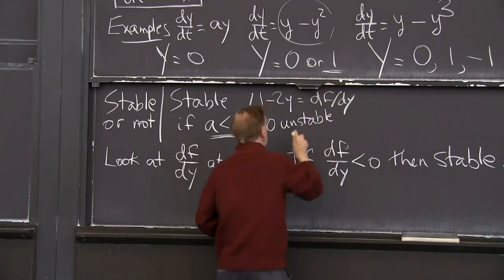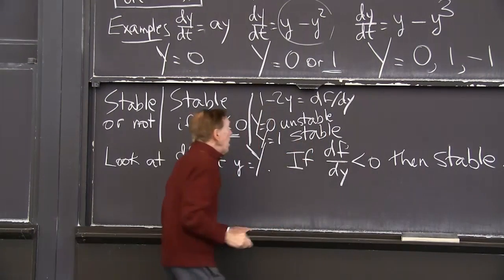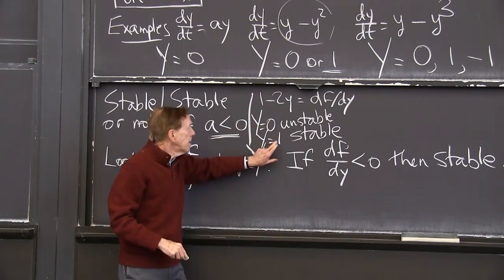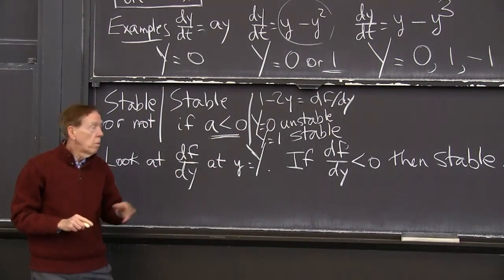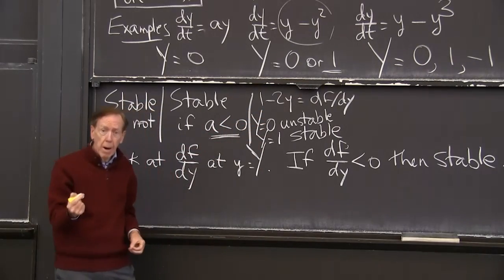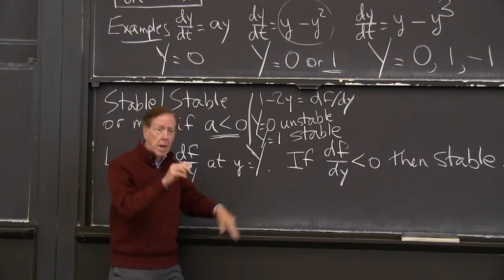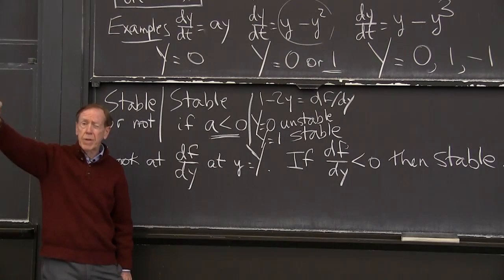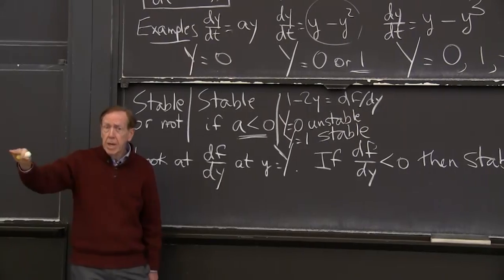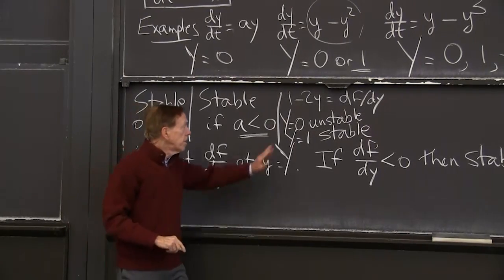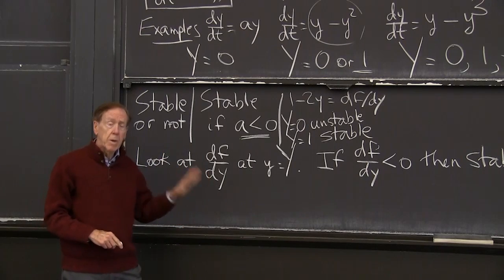And the other possibility, y equal 1, I think will be stable. Because when y is 1, 1 minus 2y, that derivative that we check, 1 minus 2y comes out minus 1 now, negative. And that's the test for stability. So capital Y equal 1. You'll remember how those s curves went up and approached the horizontal line, the steady state, capital Y equal 1. So OK with two different steady states there, one unstable and one stable.